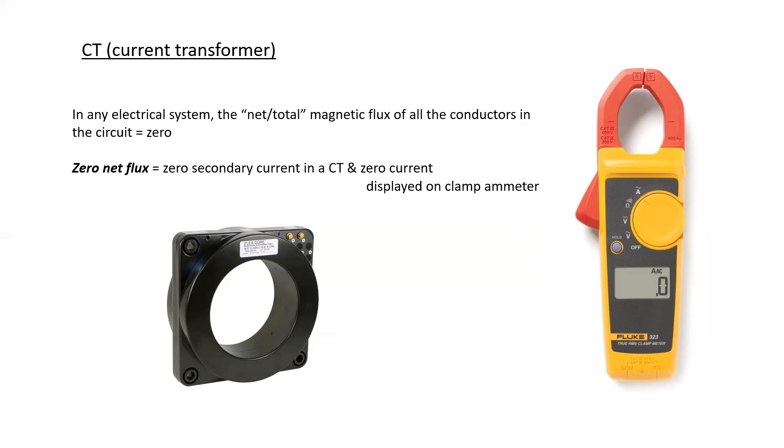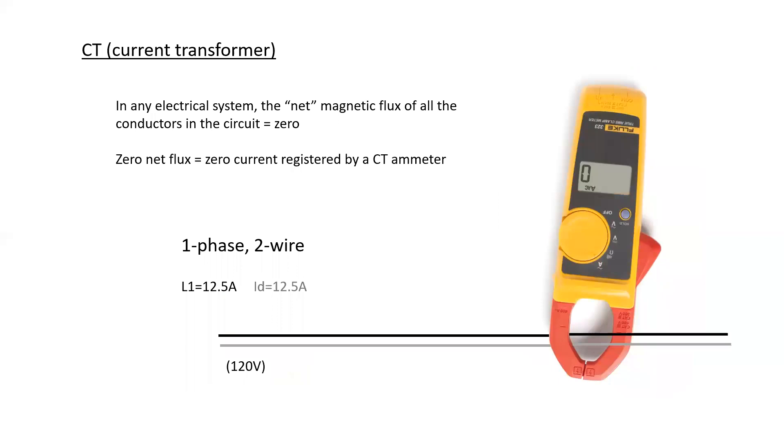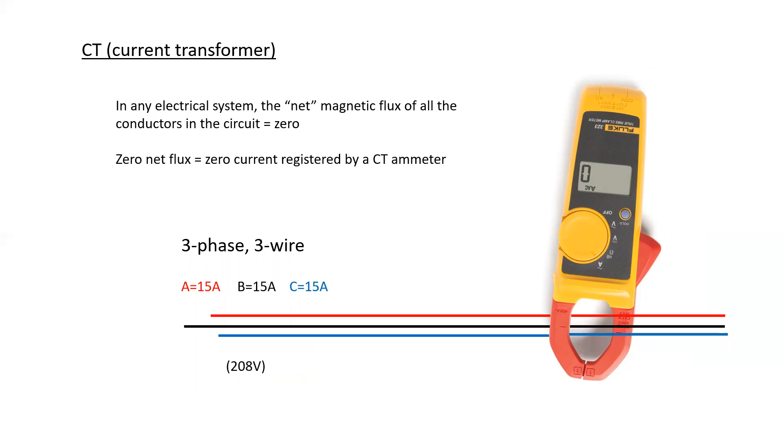Here's a few examples, not meant to memorize this. Here's a single phase two wire. What if you put both wires inside the clamp ammeter? You register zero amps. What if you put all three in there? Zero amps. What if you use a three phase four wire? Zero amps. And that's because the net or total, the sum of all of the magnetic flux, the vector sum of all of them is equivalent to zero at the very end, because we have all the conductors flowing through the same clamp.